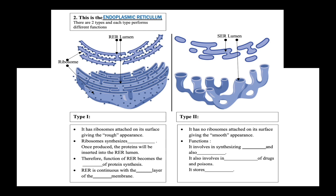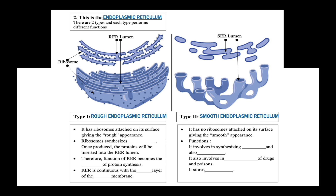This is the endoplasmic reticulum. There are two different types, differing in appearance and function. Type 1 is the rough endoplasmic reticulum, and type 2 is the smooth endoplasmic reticulum. There are ribosomes attached on the surface of the rough endoplasmic reticulum, giving it a rough appearance. However, there are no ribosomes on the smooth endoplasmic reticulum, giving it a smooth appearance. Ribosomes synthesize proteins, and once produced, the proteins are inserted into the lumen of the rough endoplasmic reticulum.